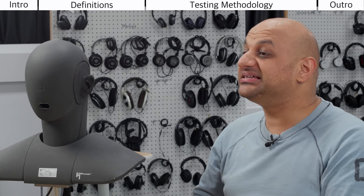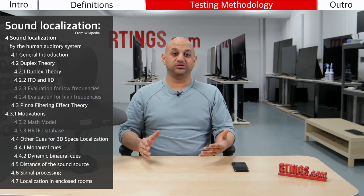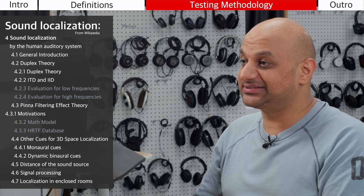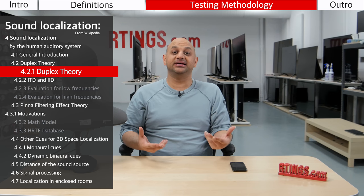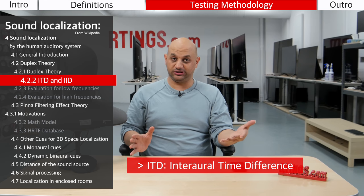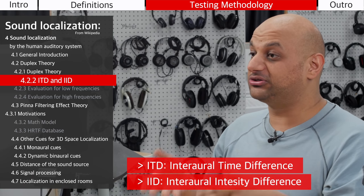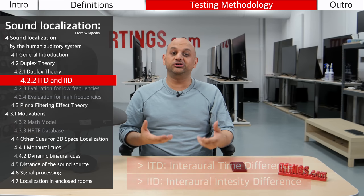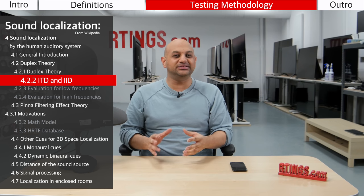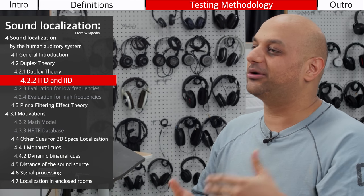In order to explain our testing methodology, I'm going to reference the sound localization article on Wikipedia and go through the items under sound localization by the human auditory system. The first section is duplex theory, which basically says we localize sound on a lateral plane in two ways: one is by measuring the time difference between sound reaching each ear, also known as ITDs, and the other is by measuring the amplitude difference of sounds at each ear, also known as IIDs. For example, if I snap my finger near my left ear, the sound gets to my left ear much quicker than my right ear, and because my head is in the way it absorbs some of the sound before it reaches my right ear, making it quieter — that's how I know the sound is coming from the left side.